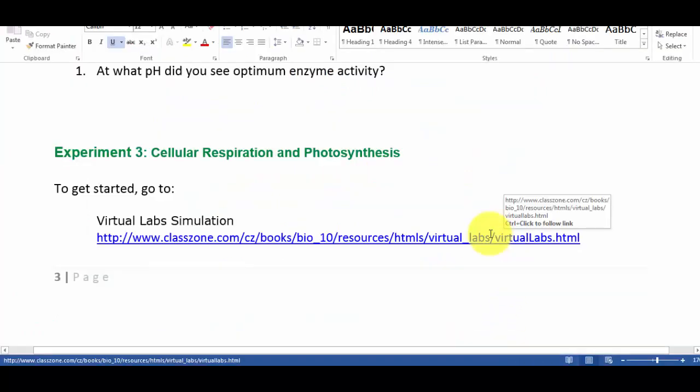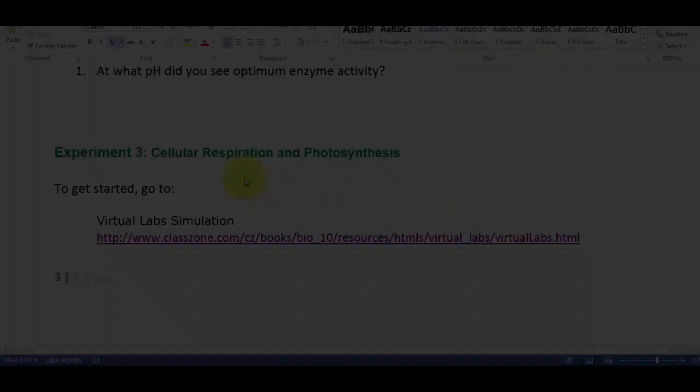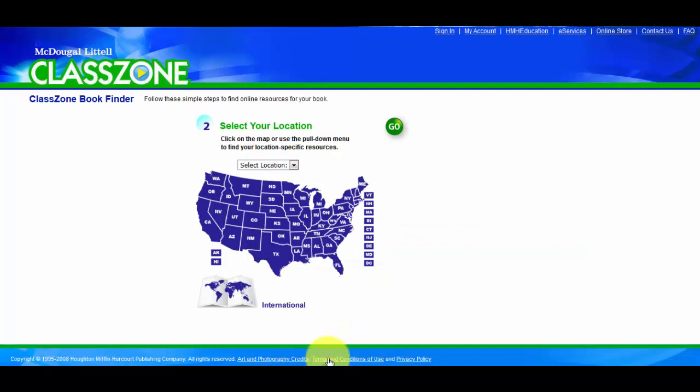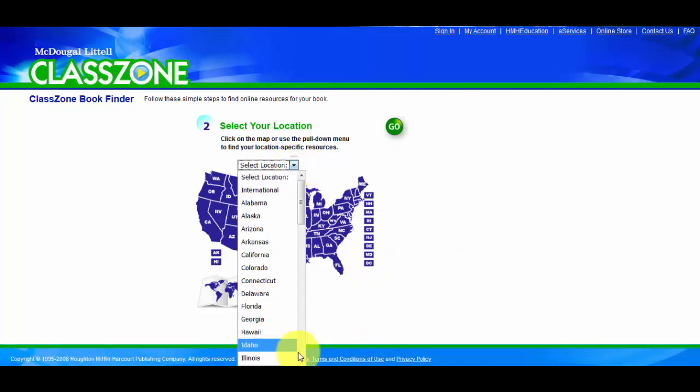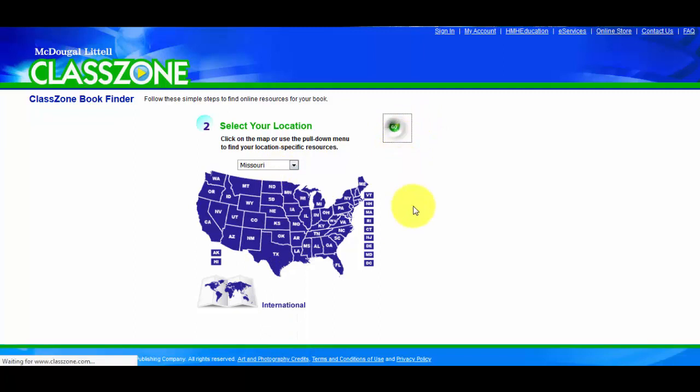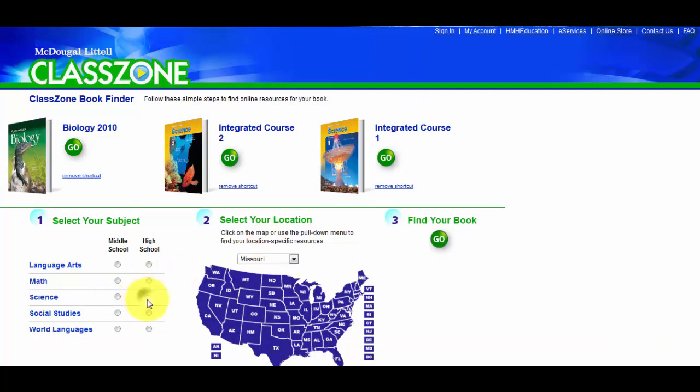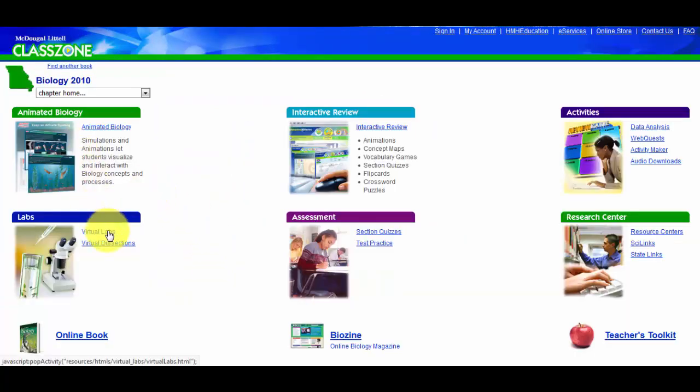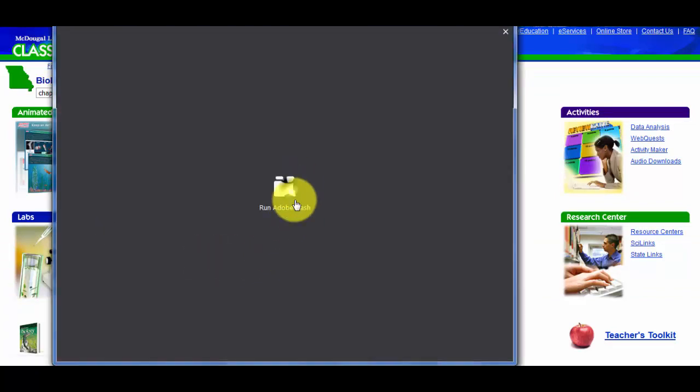Now this is the reason I'm making this lab, for cellular respiration and photosynthesis. So we're going to control-click right here, there we go. Anyway, so there it came up. Select the location, Missouri, there we go. You're going to pick high school science, find your book, Biology 2010, and then you go out here in the corner where it has virtual labs. Run the Adobe Flash.